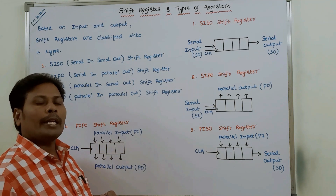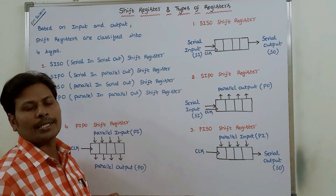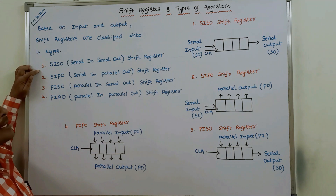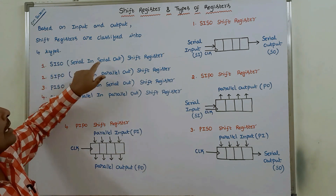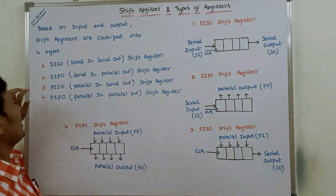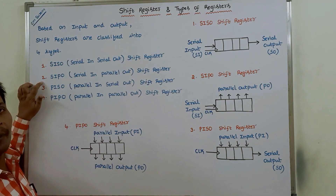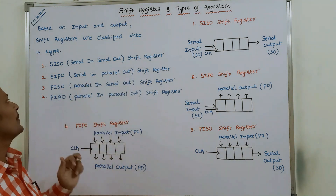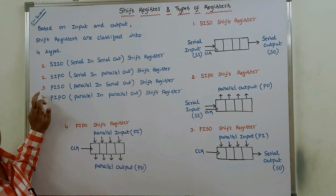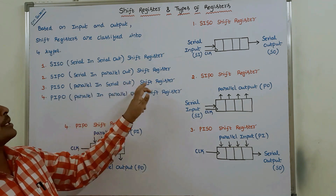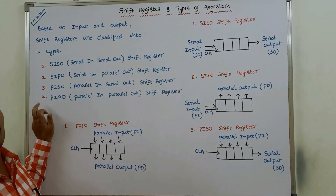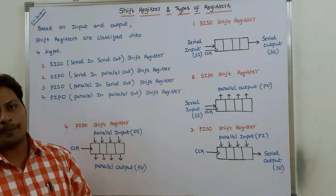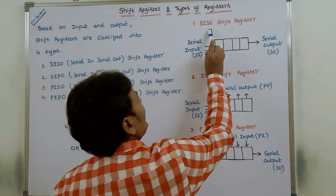Based on input and output, shift registers are classified into four types. First is SISO — serial in serial out shift register. Second is SIPO — serial in parallel out shift register. Third is PISO — parallel in serial out shift register. And fourth is PIPO — parallel in parallel out shift register.